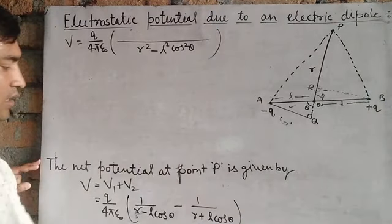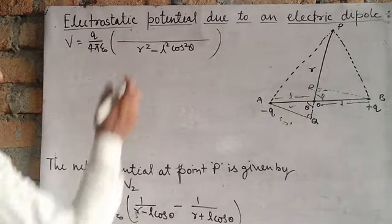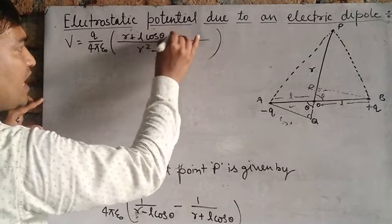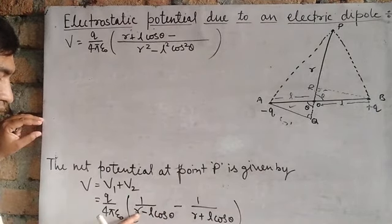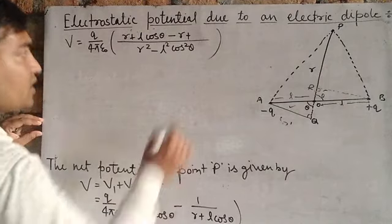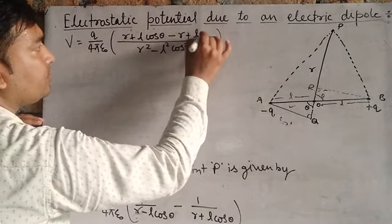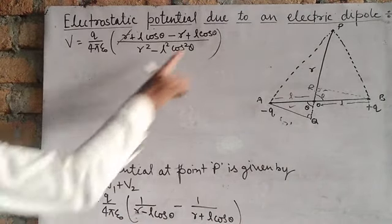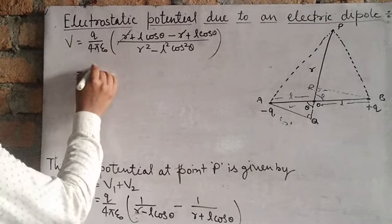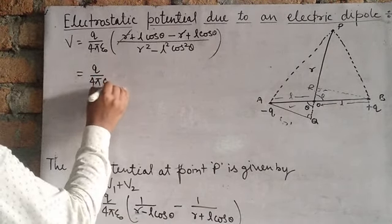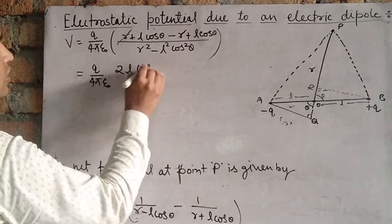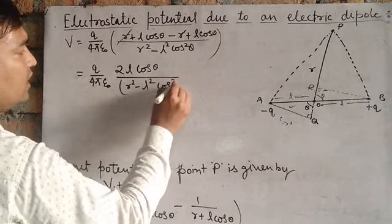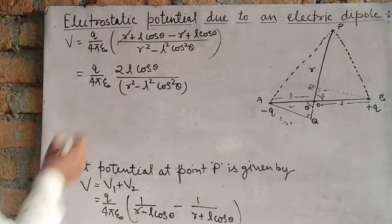After solving the numerator: (R plus L cos theta) minus (minus R plus L cos theta) — that is, minus minus changes the sign — the R terms cancel, and we get L cos theta plus L cos theta equals 2L cos theta. So V equals Q upon 4 pi epsilon 0 times 2L cos theta upon (R squared minus L squared cos squared theta).